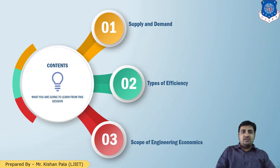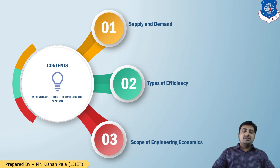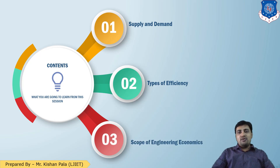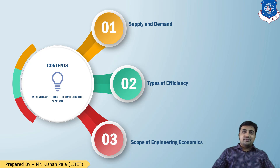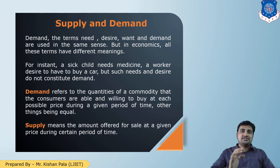In this session we will discuss about supply and demand — what is supply, what is demand — then we will go for types of efficiency, and in the last segment we will discuss about the scope of engineering economics. So let us start with supply and demand, and first of all we have to understand what is supply and what is demand.